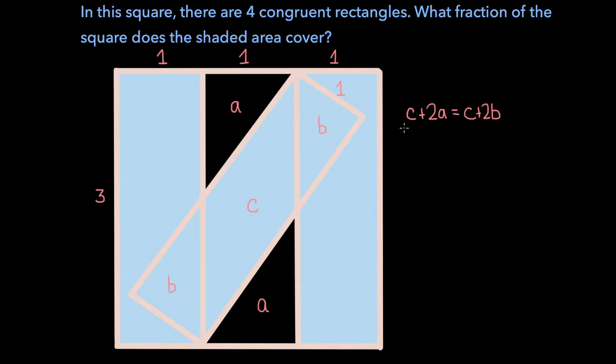Now if we simplify this a little bit, we can cancel out the C's and we get that 2A is equal to 2B, and so A equals B. And so in the context for our figure, this means that the area of this triangle and the area of this triangle and all other such pairs are equal.